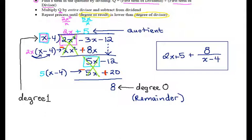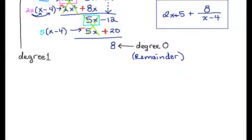I do need to put the plus in between the quotient and the remainder over divisor term. All right. So, let's go on to another example.